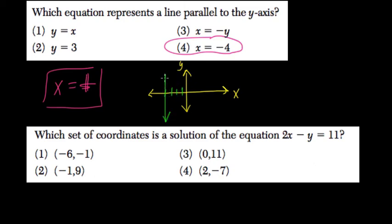x equals negative 4 is right here. It's a line where every single point that you pick, x is always going to be equal to negative 4.